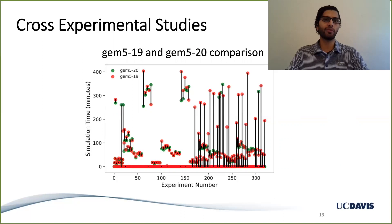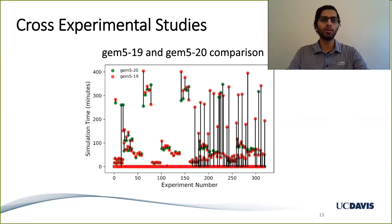This visualization also helps us compare simulation time between two different simulator versions. As you can see, most of the green dots are generally lower than the red dots, showing that Gem5 20 is doing better in terms of simulation performance.